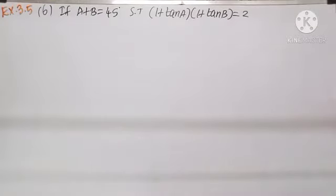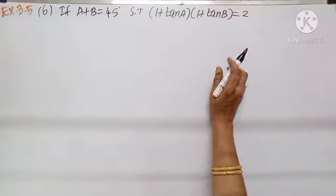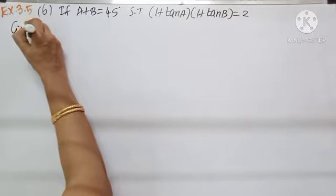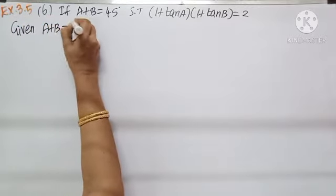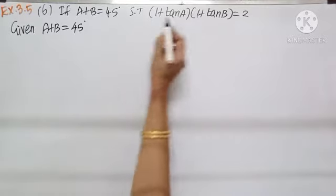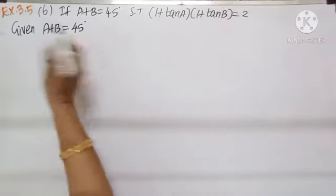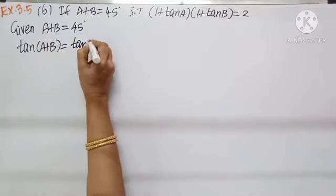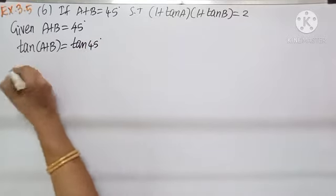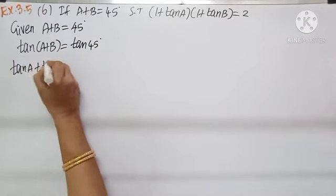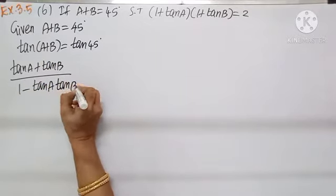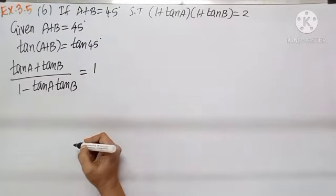Question number 6 — one of the most important problems and an important result too. If A plus B is 45°, show that 1 plus tan A into 1 plus tan B equals 2. Given A plus B equals 45°, taking tan on both sides: tan(A+B) equals tan 45°. The formula for tan(A+B) is tan A plus tan B by 1 minus tan A tan B, which equals 1.